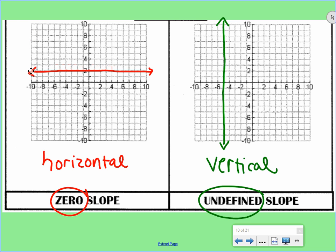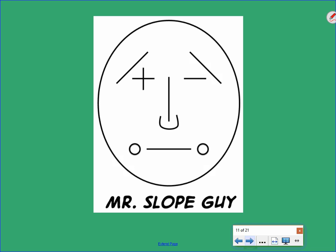So if you look at Mr. Slope Guy, we have positive slope goes up the mountain. Negative slope goes down the mountain. Undefined slope, right there you see the U, and it's a nice vertical straight line. And for our zero slope, see the zeros on either side? It has a nice straight horizontal line.